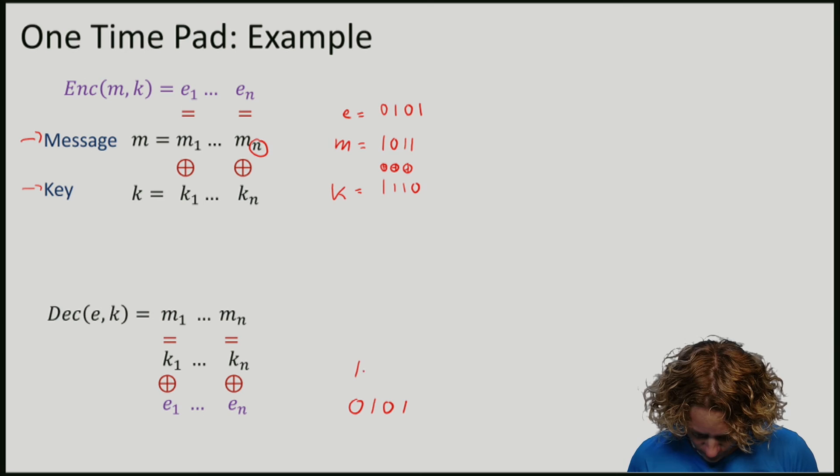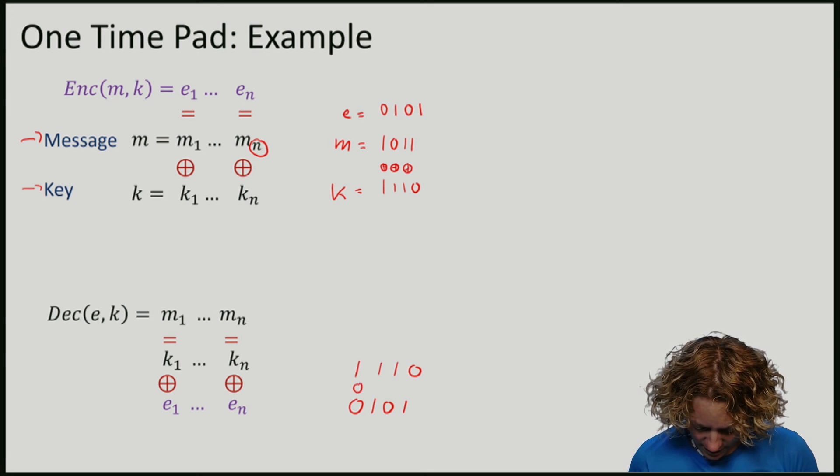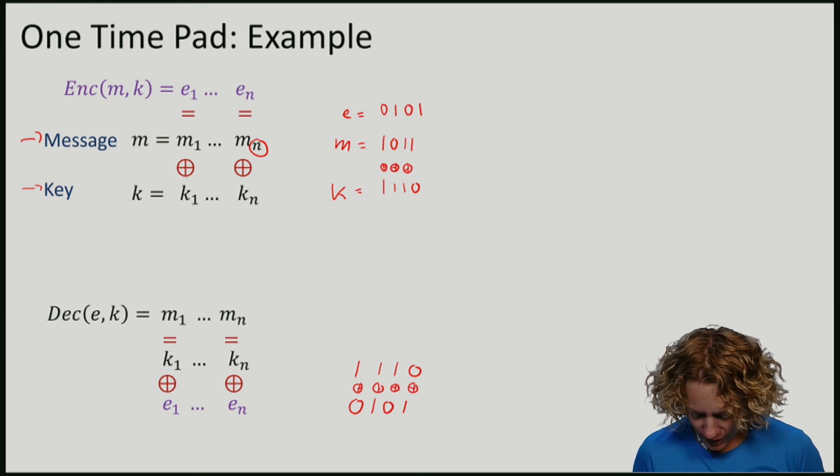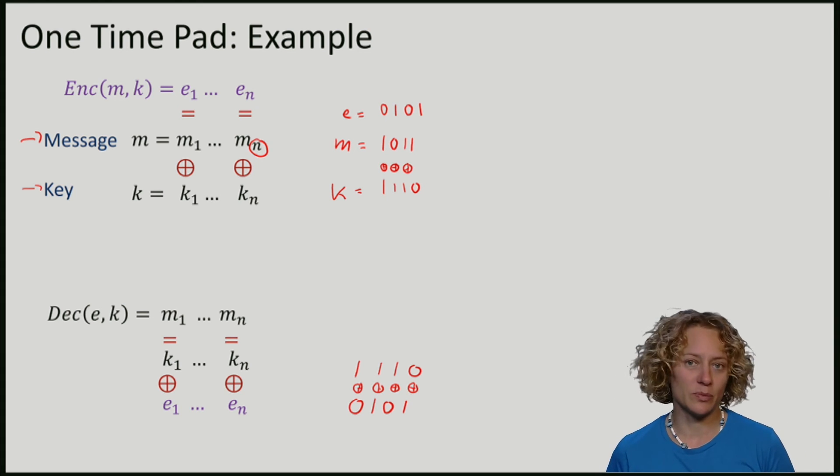So the key bits were 1, 1, 1, 0, and he takes every bit of that key and XORs them with the encrypted bits.